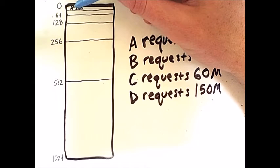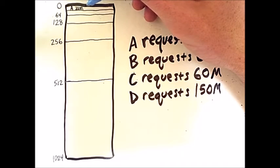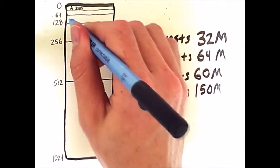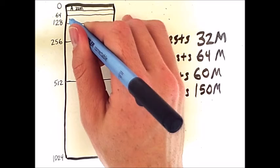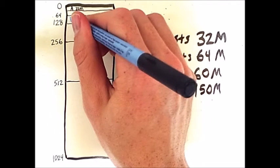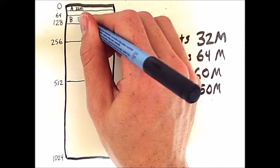However, the first of those regions contains two more regions, one of which is filled with process A. Therefore, B's request has to go in this region of size 64, right here.